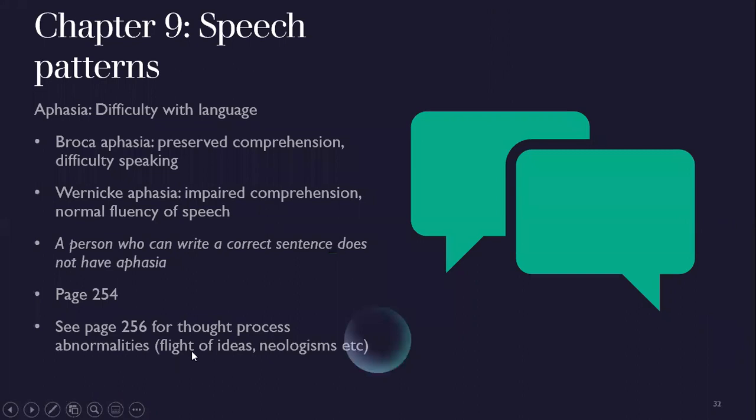Speech patterns: Broca's aphasia — the patient can comprehend you but has difficulty speaking. Wernicke's aphasia — impaired comprehension but normal fluency of speech. An important point: if a patient can write a correct sentence, they do not have aphasia — even if they can't speak, a complete written sentence rules out aphasia.